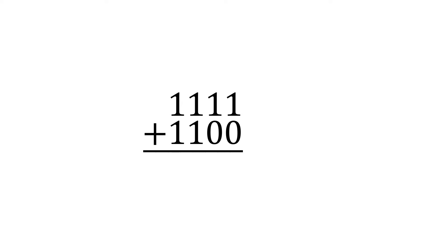Now let's try 1111 plus 1100. 0 plus 1 is 1 in the ones place. 0 plus 1 is 1 in the tens place. 1 plus 1 is 0 in the hundreds place with a carry of 1 to the thousands place. 1 plus 1 is 10, plus the carried 1 gives us 11. That's a 1 in the thousands place and a carry of 1 to the tens thousands place. So the answer comes out to 11011. That's all there is to binary addition.